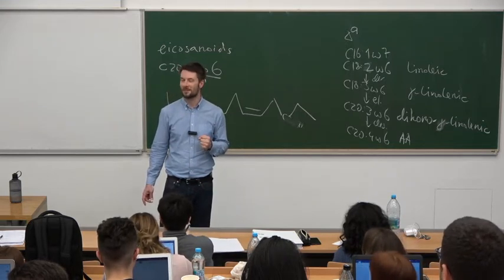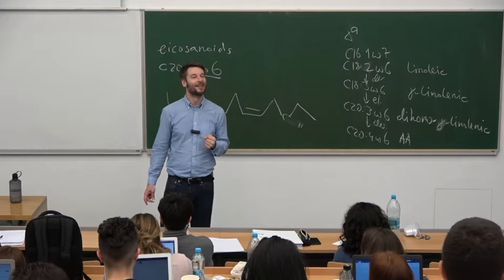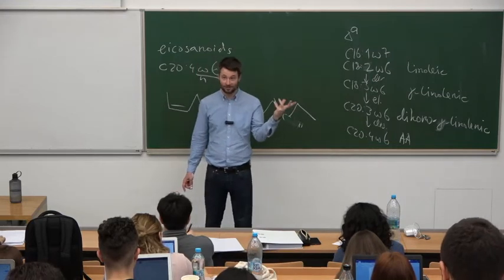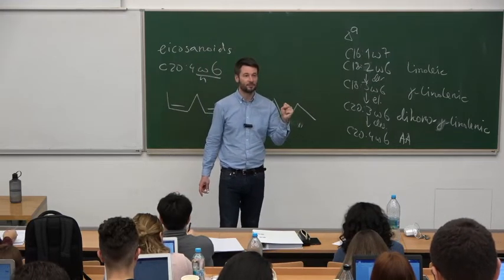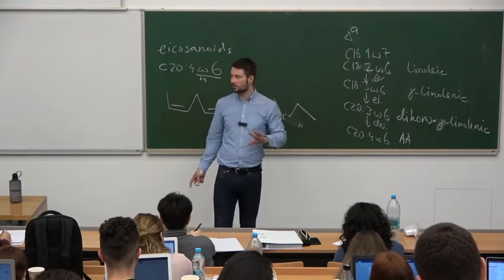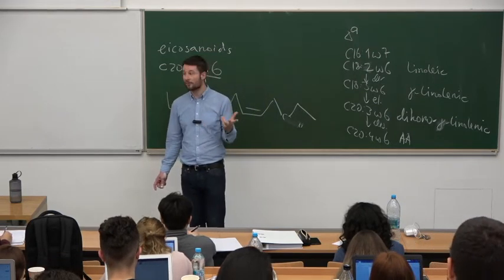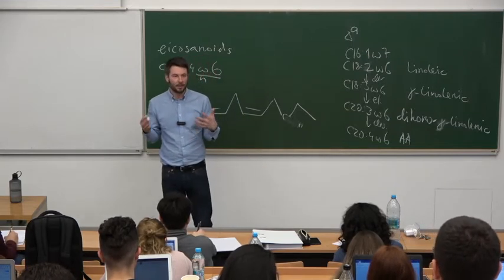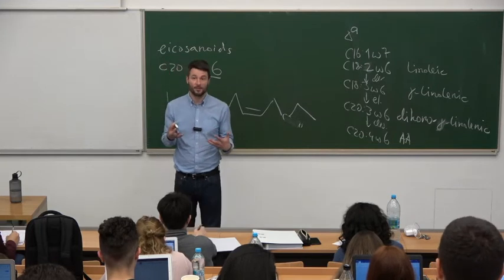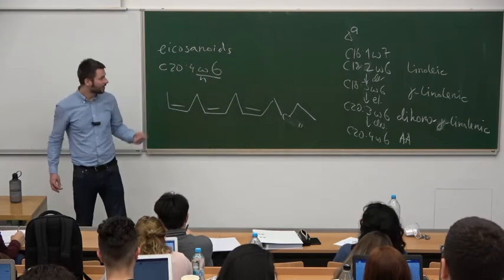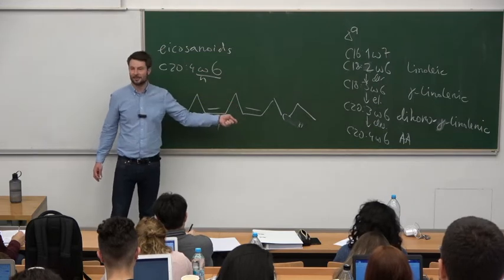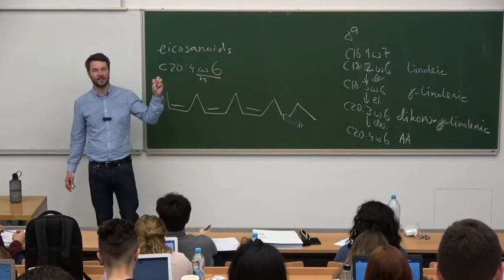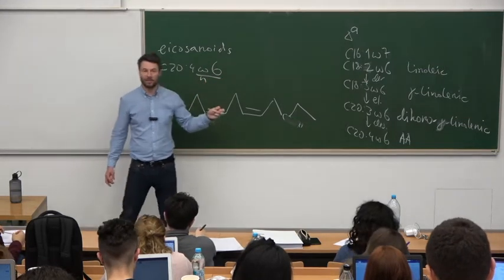Is this general scheme of how eicosanoids are synthesized clear? A cyclical pathway gives prostaglandins and thromboxanes; a linear pathway gives leukotrienes and lipoxins. Do you have any questions about the first part of the lecture? The first part was really about understanding how things work, not just learning facts. The second half will be more about learning various names. So ask questions about the principles now, because it will make things easier later.